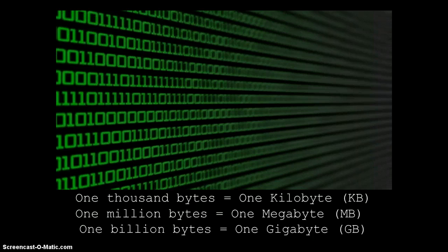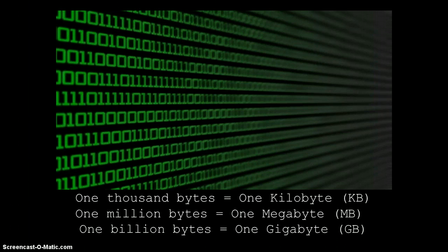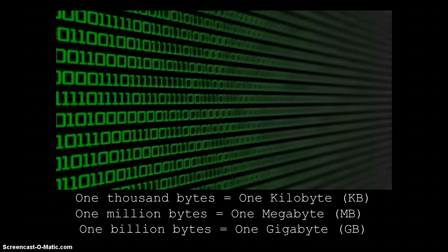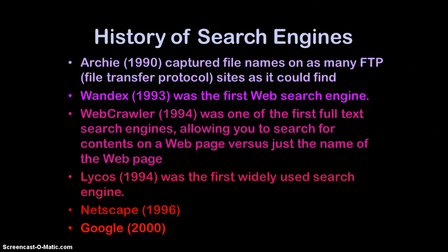Let's talk about storage units of information. One kilobyte is a thousand bytes. One megabyte is a million. And one gigabyte is a billion. Remember KB, MB, GB in that order, because you need to know which is the most, which is the least, and which is in the middle.